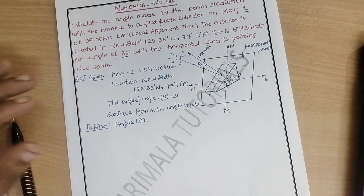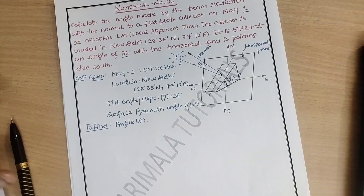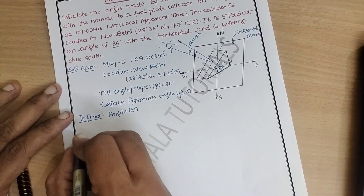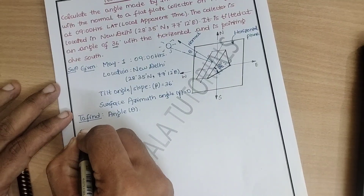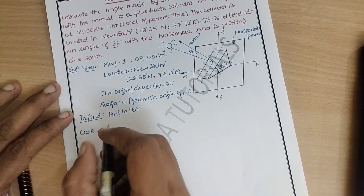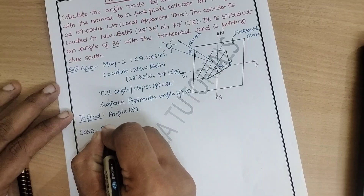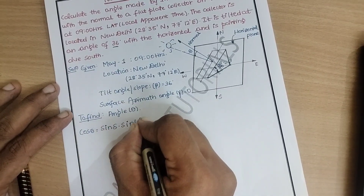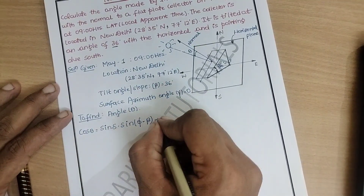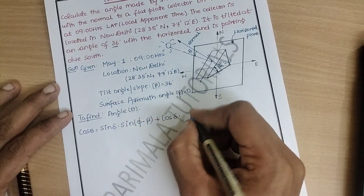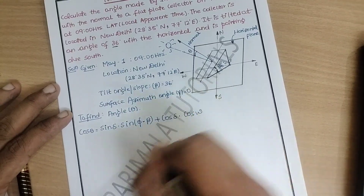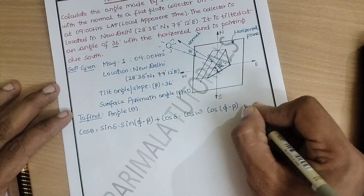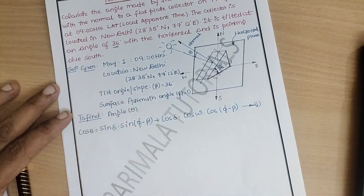To find angle theta, there is a simple formula. Let us write the formula and substitute the parameters. The angle theta is given as: cos(theta) = sin(delta) × sin(phi − beta) + cos(delta) × cos(omega) × cos(phi − beta). We will call this equation number one.